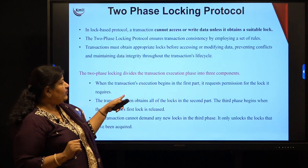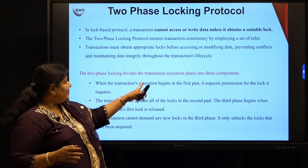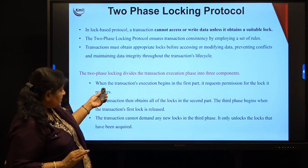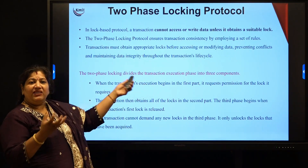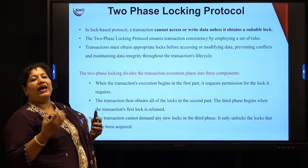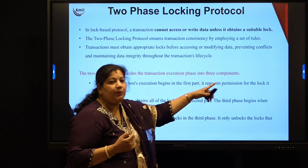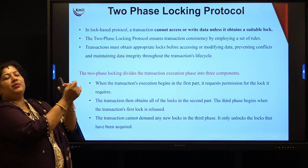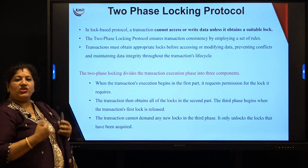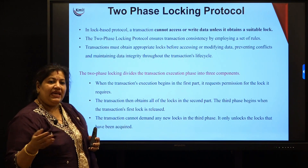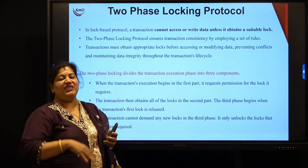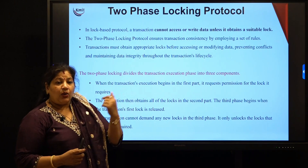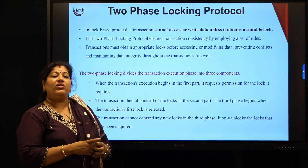How does it work? It divides the transaction execution into three components. The first phase begins with acquiring locks — it requests permission for the lock. For example, it says it wants to read data item A (shared lock), data item B (shared lock), data item C (maybe exclusive lock). As it continues working, it acquires the locks required.